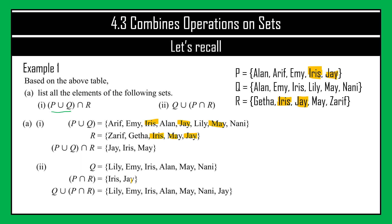The full expression is Q union (P intersect R). Union means everything from Q and everything from P intersect R. Q has Lily, Amy, Iris, Alan, May, Nani; P intersect R gives Iris and Jay. Combined and listed in ascending order, our final answer is {Alan, Amy, Iris, Jay, Lily, May, Nani}.